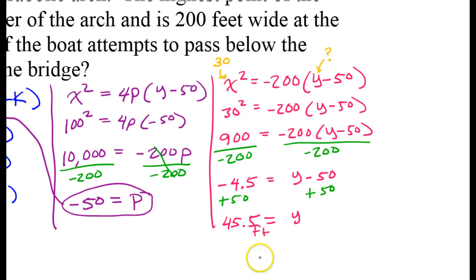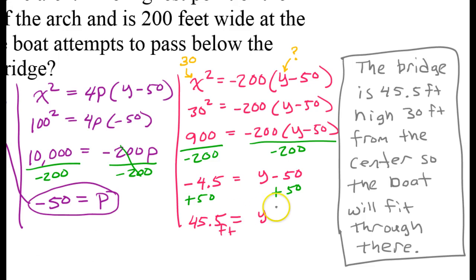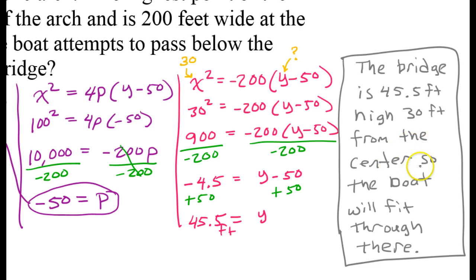45.5 feet is tall enough that a 30-foot boat will fit. The bridge is 45.5 feet high 30 feet from the center, so the boat will clear the arch.